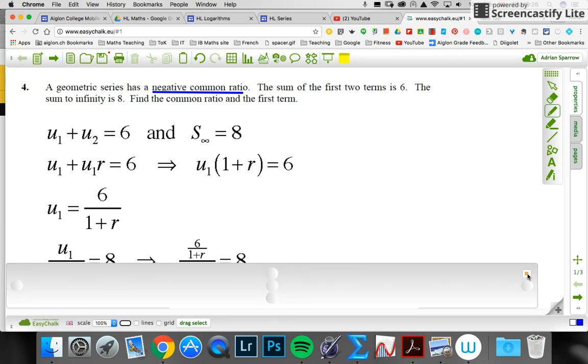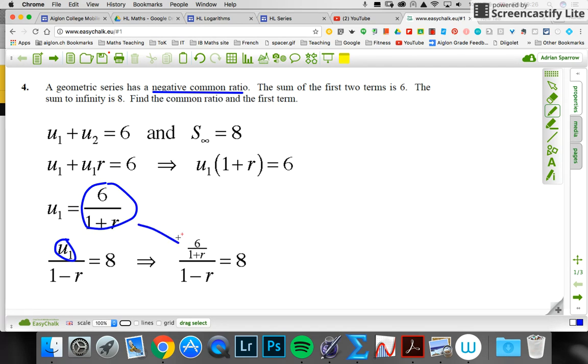Now the sum to infinity is the other bit here. This is the formula for the sum to infinity, and I know it equals eight. So I can now replace this u₁ with this here. I've replaced the u₁ here with that.